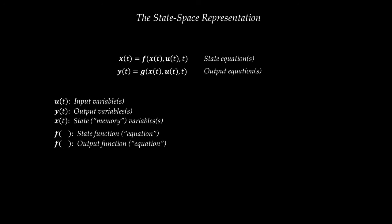We also make a distinction between time-invariant and time-varying systems. If f and g are functions of time as well as x and u, we have a time-varying dynamic system. If f and g depend only on x and u — not on time — we have a time-invariant dynamic system. This is a lot of detail, and I hope you'll see how it applies to different kinds of systems in the coming tutorials.